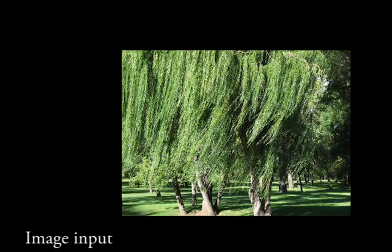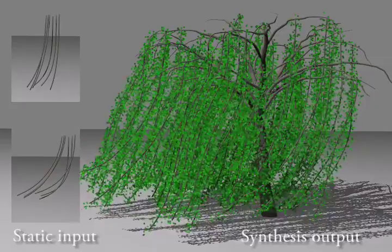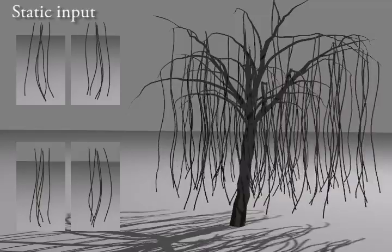We can also work with captured image input. In this example, we manually prepare two static frames based on a photo of a willow tree, and then use them to guide the synthesis of dynamic tree branches. The output still looks natural due to our graph synthesis method.